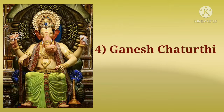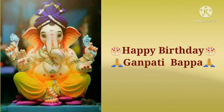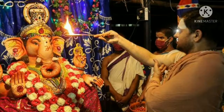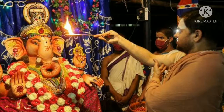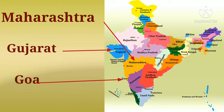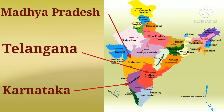5. Ganesh Chaturthi. Ganesh Chaturthi is an auspicious Hindu festival which is celebrated for 10 days every year. The festival is celebrated in the Bhadra month as per the Hindu calendar, which generally falls in mid-August to September. It marks the birthday of Lord Ganesha. Ganesha is known as the god of wealth, science, knowledge, wisdom and prosperity. That is why most Hindus seek his blessings before starting any important work. This festival is majorly celebrated in Maharashtra, Gujarat, Goa, Madhya Pradesh, Karnataka and Telangana.